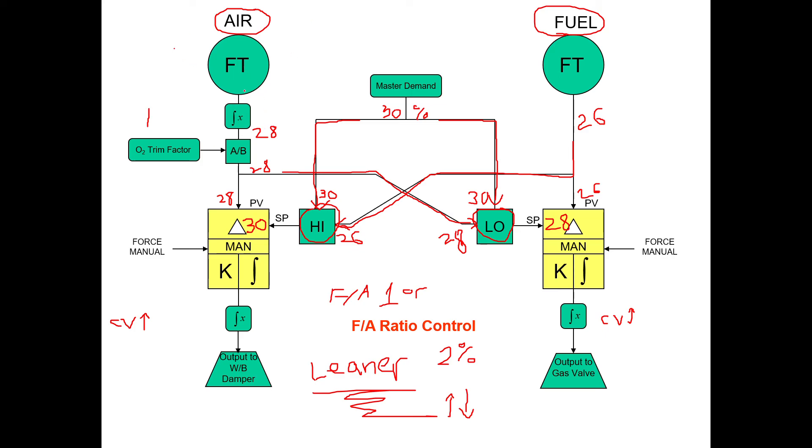So there you have it. Now as you can see, the air PV is always going to this low select between the master and the air PV to become the set point of fuel. The fuel flow PV is always going to the high select between the master and the fuel to become the air set point, thus always ensuring we have a leaner ratio as we increase or decrease in firing rate.